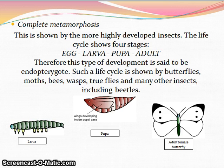During the pupal phase, the internal organs are broken down into a kind of soup, which then acts as food for special growth centers that form the adult body. When reorganization is complete, the adult is ready to emerge. When outside conditions are suitable, the final molt occurs and the adult insect emerges.